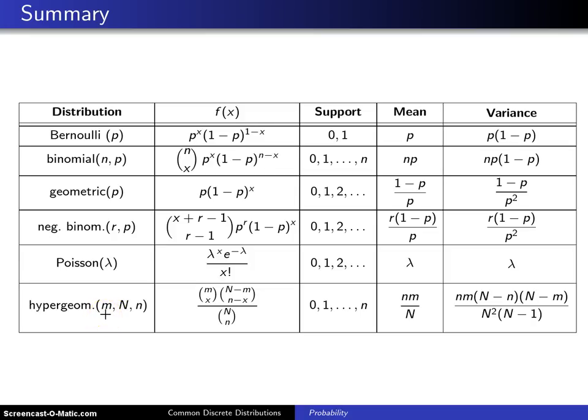In addition, we covered a few other distributions, and the first of those distributions is the discrete uniform distribution, equally likely values between A and B.